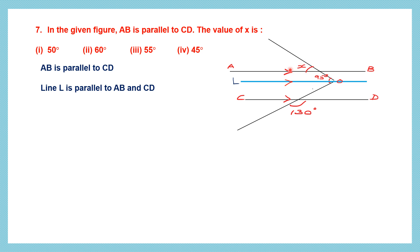Now we need to find angle X. We see that angle 95 degrees is not only for one portion — it covers both above and below the blue line. Above the blue line, if we know the value, angle X and that will be corresponding angles and equal. So we name the two parts: angle 1 (above) and angle 2 (below). Angle 1 plus angle 2 equals 95 degrees.